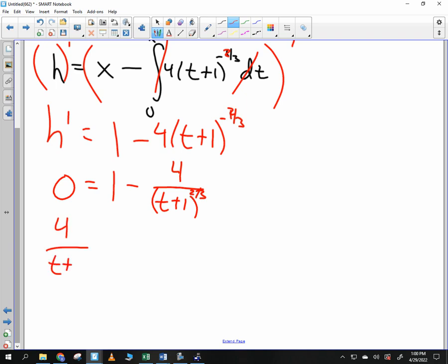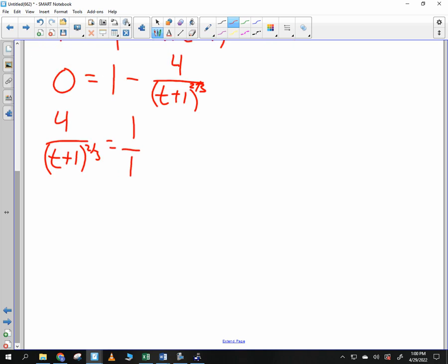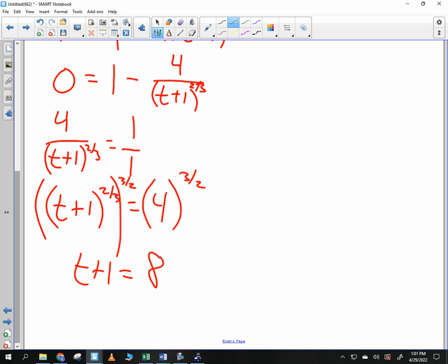So 4 over t plus 1 to the 2 thirds power is equal to 1 over 1. How do you solve that? Cross multiply. t plus 1 to the 2 thirds power is equal to 4. Does anybody know how to get rid of a 2 thirds exponent? Raise it to the 3 halves. Very good. So we're going to raise it to the 3 halves. So I get t plus 1 is equal to what is 4 cubed? 64 square root? 8. I subtract 1. I get t is equal to 7.